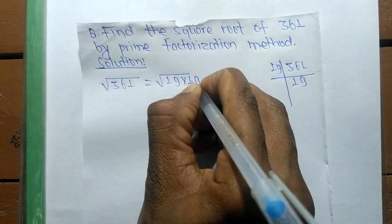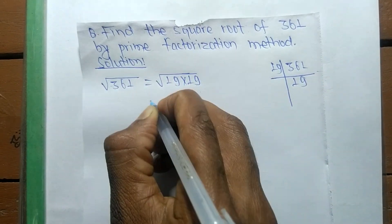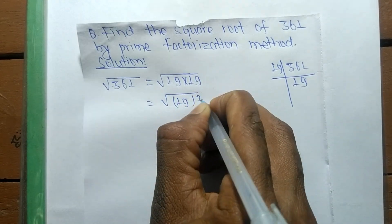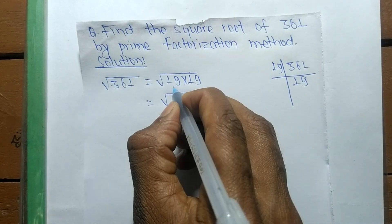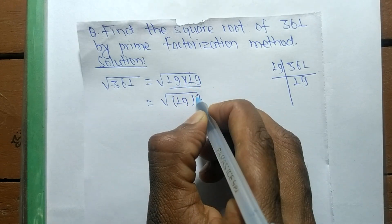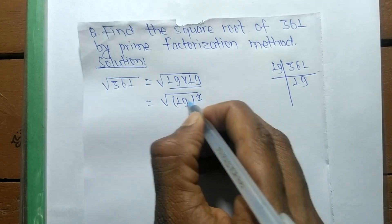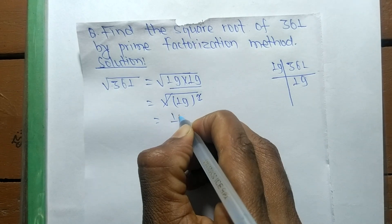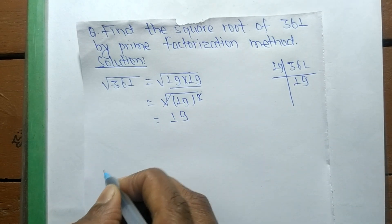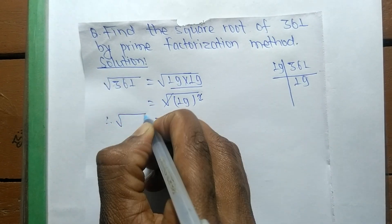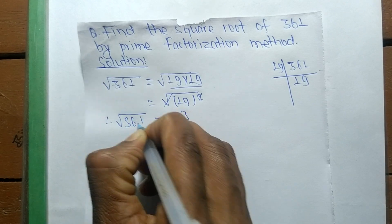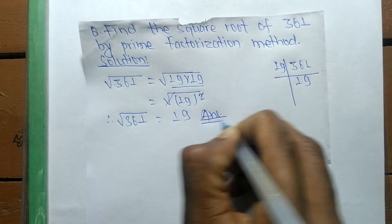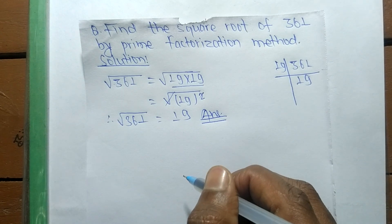We have 19 times 19, which is equal to 19 squared. Since we are taking the square root, the square cancels out, and the number 19 comes out. Therefore, the square root of 361 is equal to 19.